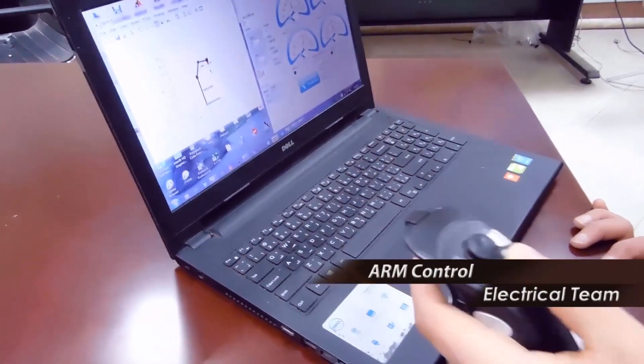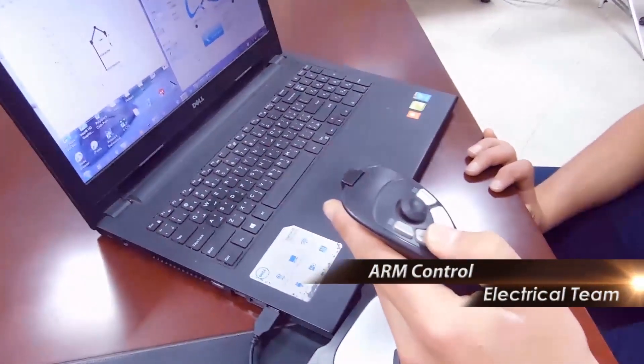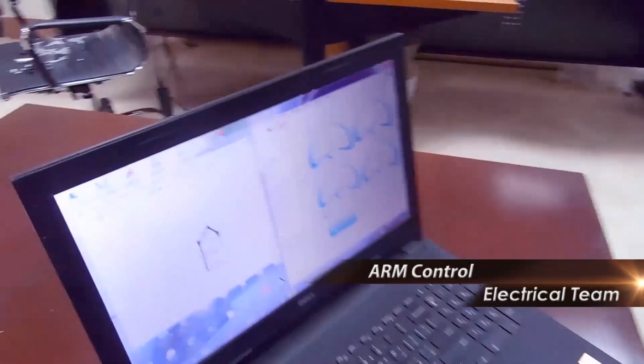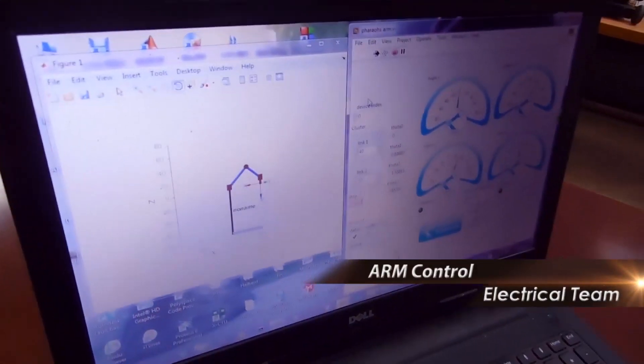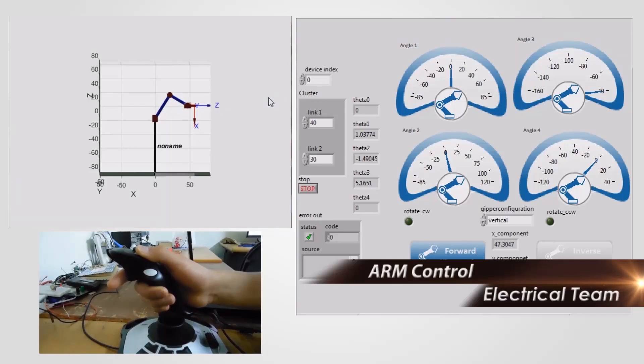The rover arm is designed to work in 850 cm workspace with 5 degrees of freedom. Its control system was developed using inverse kinematics. Matlab was used to build the model for the arm.